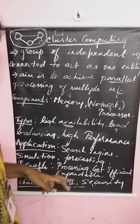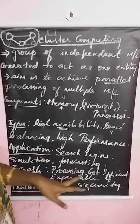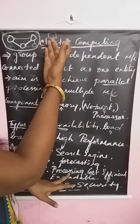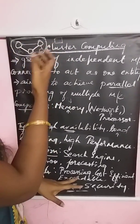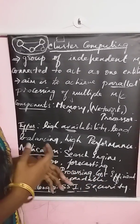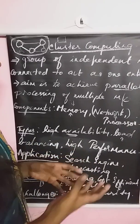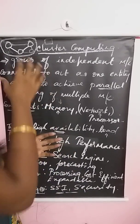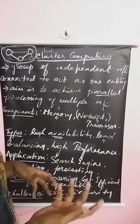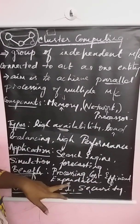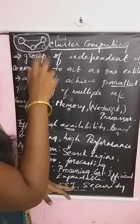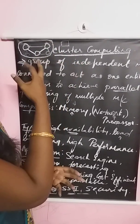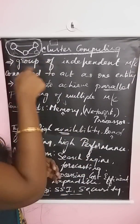The benefits of cluster computing include three major advantages: processing, cost efficiency, and expandability. For processing, since a task is split among the nodes, the processing speed increases. For cost efficiency, instead of buying one supercomputer which is highly costly, cluster computing uses normal machines as nodes, making it far more economical for high computational tasks. For expandability, since the size of the cluster is not fixed, nodes or independent machines can be added to expand the cluster so that high computational tasks can be processed easily.